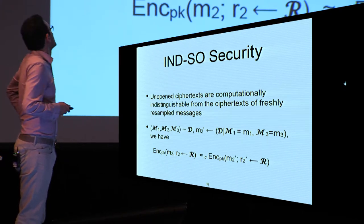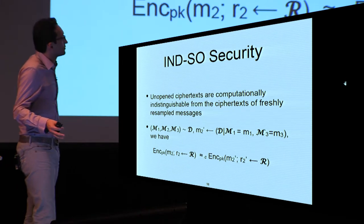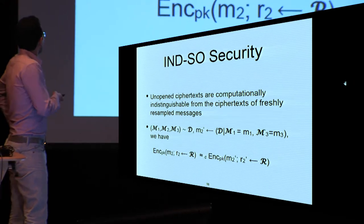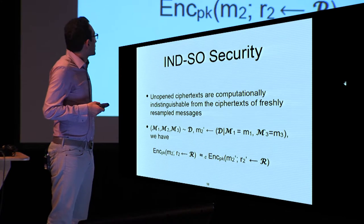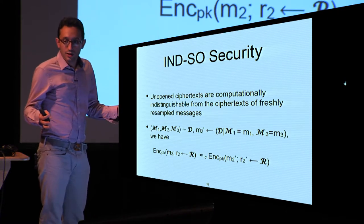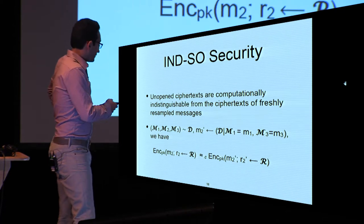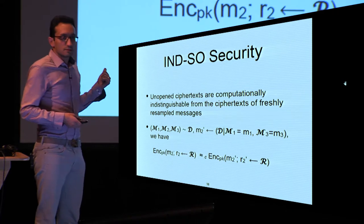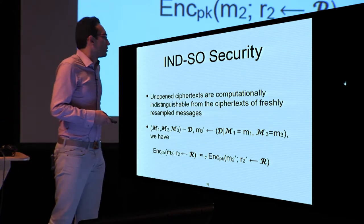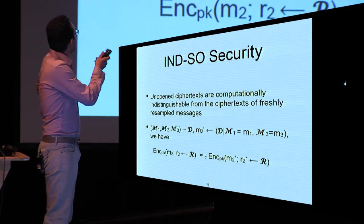This is the notion of indistinguishable selective opening (IND-SO) security. We would like unopened ciphertexts to be computationally indistinguishable from ciphertexts freshly resampled from the message space. Formally, all three M1, M2, M3 are distributed according to distribution D. Given that M1 and M3 are opened by the challenger, we resample M2' and require the encryption of M2 (unopened) to be computationally indistinguishable from the encryption of the freshly resampled M2'. This resampling may not be efficient, but that is what the notion requires.